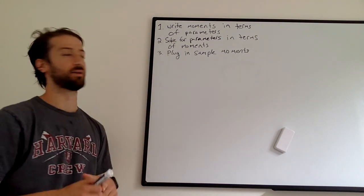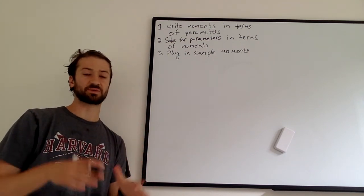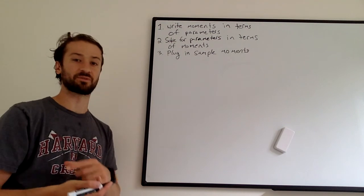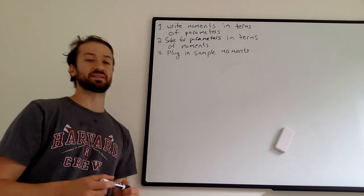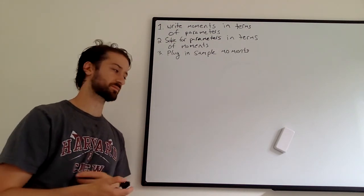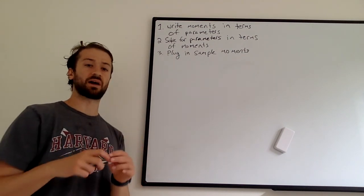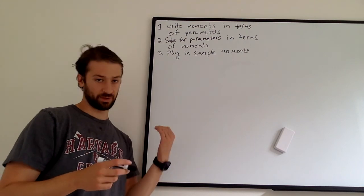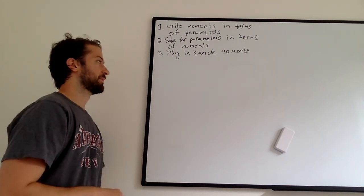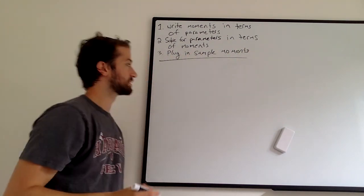I wrote the three steps here and they're pretty simple. We start by just writing our moments in terms of our parameters. Then step two, we flip that — we solve for the parameters in terms of the moments. Then step three is plug in the sample moments. That might all sound super confusing, which is why we're going to do an example here. This is all described in the book, which is linked in the description — we're going to do the same example that's in the book.